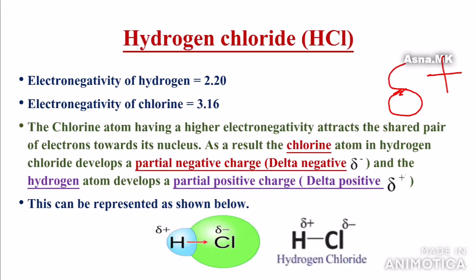Chlorine, having higher electronegativity, attracts the shared electrons. This is not a complete transfer — it is a share. So we get a partial positive charge on hydrogen and a partial negative charge on chlorine: delta-positive and delta-negative.